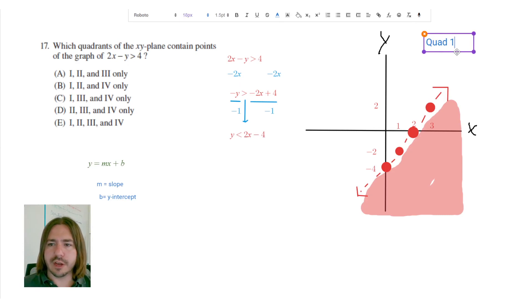Okay, quadrant one is the top right. Quadrant two is in the top left. Three is in the bottom left. And then four is in the bottom right.